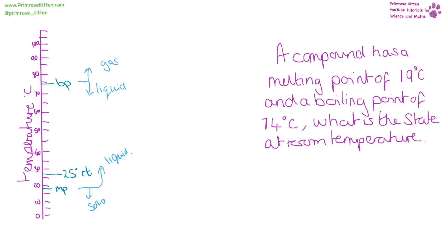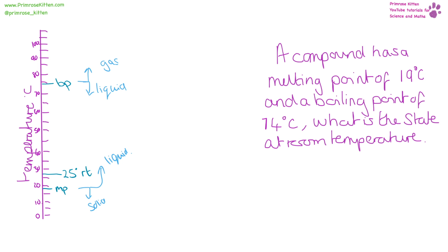The other important thing to remember about boiling point and melting point is that the opposite transition is the same number. So boiling point is equal to condensing point, and melting point is equal to freezing point. We just talk about boiling point and melting point — they are exactly the same number. So if the boiling point is 74, the condensing point is 74. If the melting point is 19, the freezing point is 19.